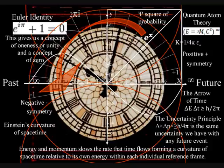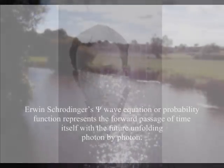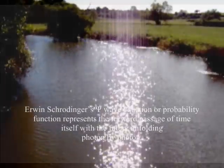The first is that the quantum wave particle function, or probability function of quantum mechanics, represents the forward passage of time itself, photon by photon.